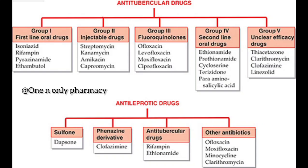Group 3 — Fluoroquinolones. A short trick to remember fluoroquinolones: these drugs end with the suffix '-floxacin'. The four drugs are Ofloxacin, Levofloxacin, Moxifloxacin, and Ciprofloxacin. All these '-floxacin' drugs come under fluoroquinolones and are used in anti-tubercular treatment.